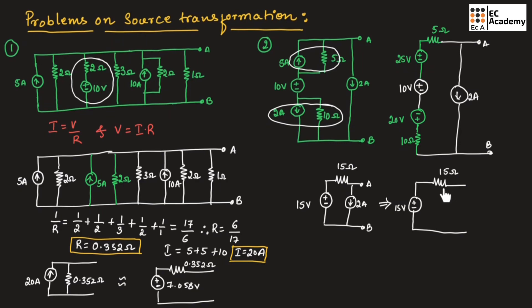This resistor should be connected in parallel with that current source. The arrow of this current source points upwards because we have the polarity as positive and negative, so it will be 1 ampere with a 15 ohm resistor connected in parallel. This is about the problems on source transformation — hope you have understood the topic, thank you.